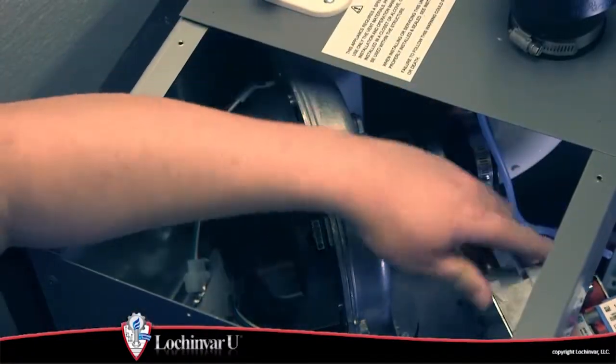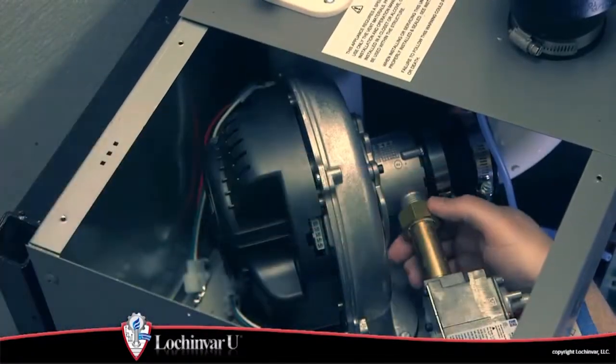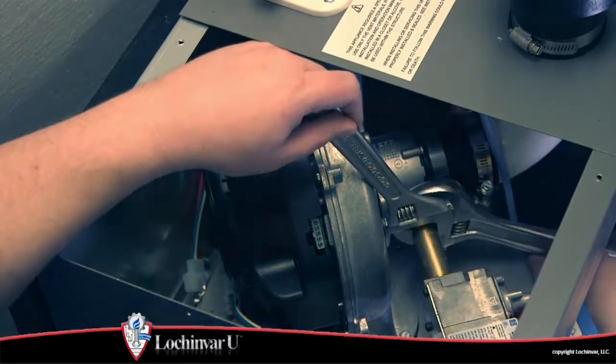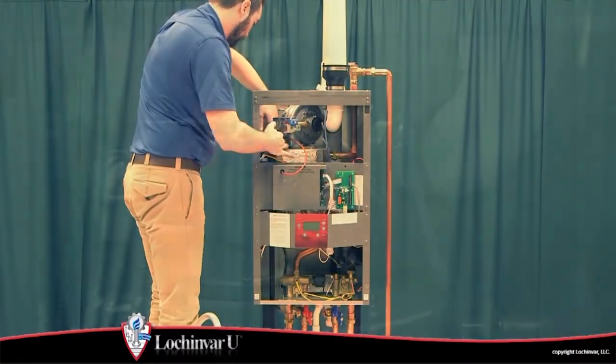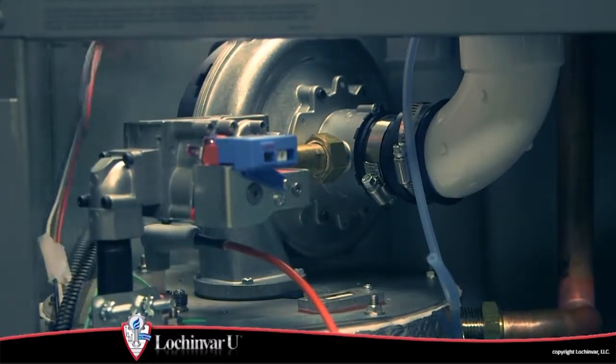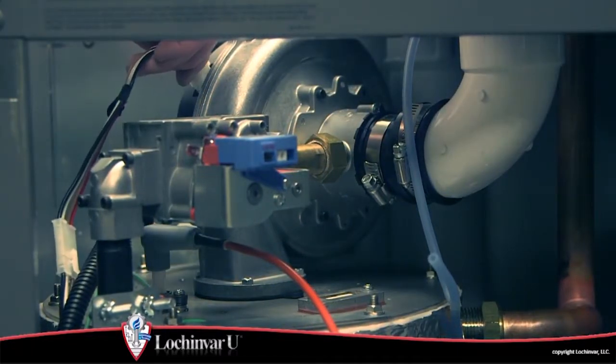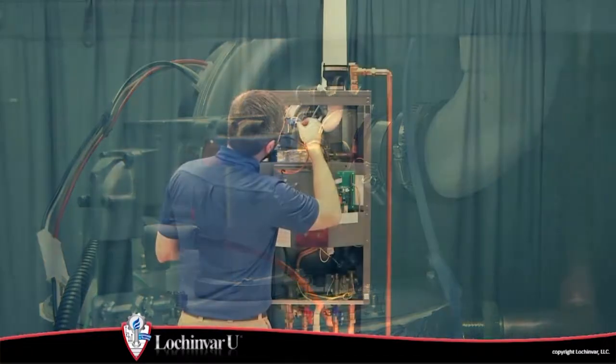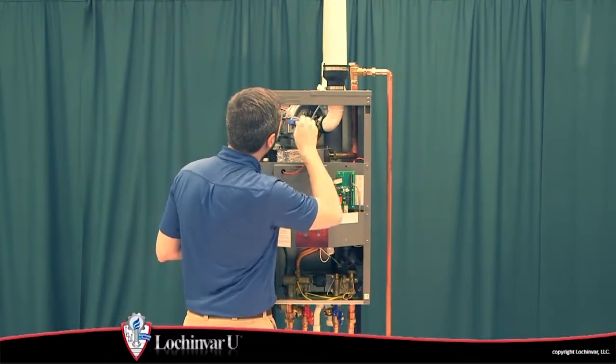Then reinstall the gas valve. Now reconnect the wiring from the spark igniter and ground terminal, the two wiring harness connections on the combustion blower, and the gas valve wiring harness and reference hose to the gas valve.